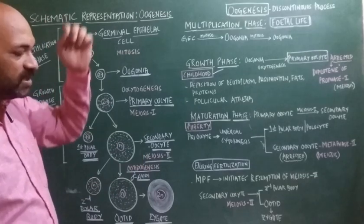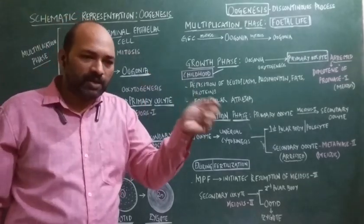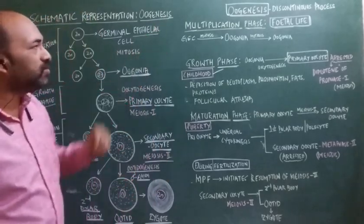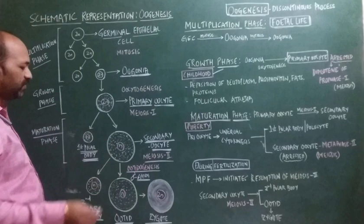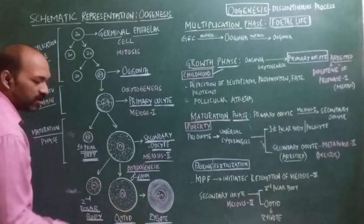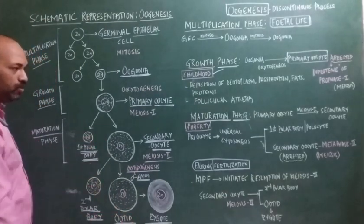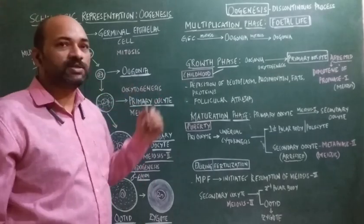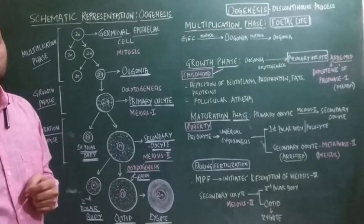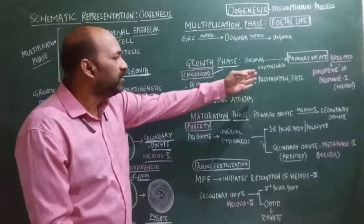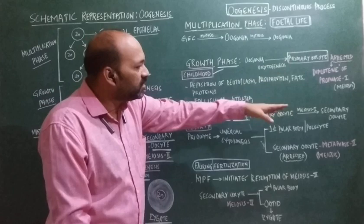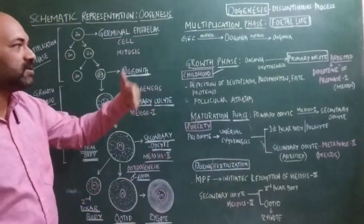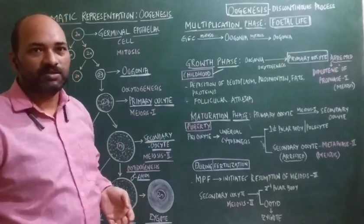As we discussed in spermatogenesis, one spermatogonium gives rise to four functional sperms. In oogenesis, the result is formation of one functional ovum and two polar bodies. For exams, remember where the primary oocyte is arrested, where the secondary oocyte is arrested, and what is required for resumption of meiosis.